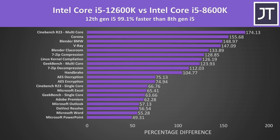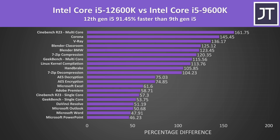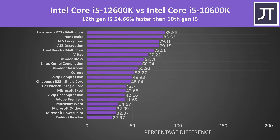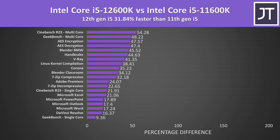Comparing 8th gen to 12th gen, the 12600K has a massive 99% lead. While differences between each generation were smaller, things really add up over 5 generations. 12th gen still has a good lead over 9th gen at around 91%, then around 55% ahead of 10th gen. As 10th gen added hyperthreading this closed the gap, and then 12th gen was 32% ahead of 11th gen.